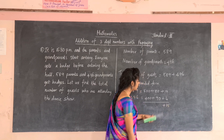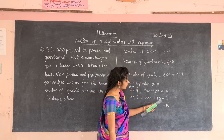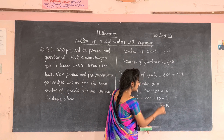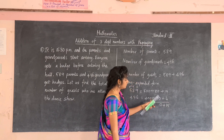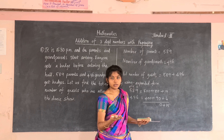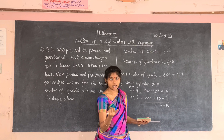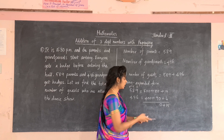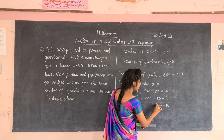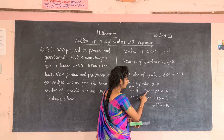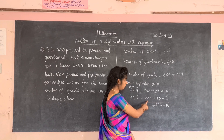Then write zero plus zero as zero — that stays the same. Then add eighty plus ninety: keep eight in your mind and take nine in the fingers. Say after eight — nine, ten, eleven, twelve, thirteen, fourteen, fifteen, sixteen, seventeen. Write 17. Then 500 plus 400 gives 900.